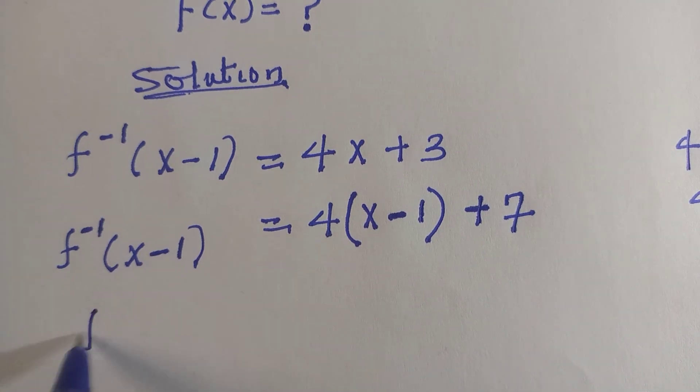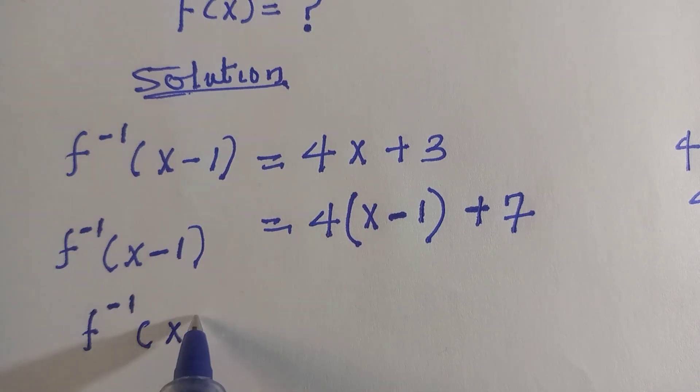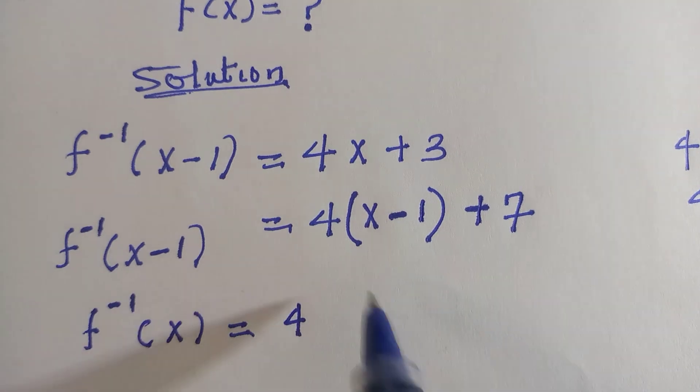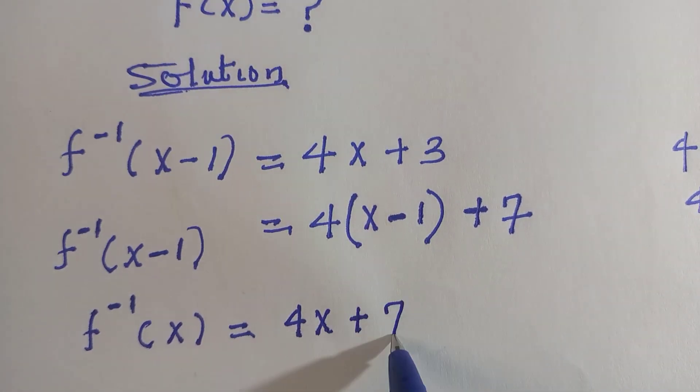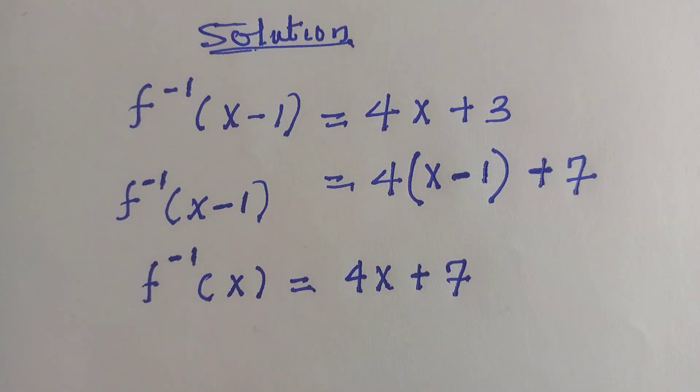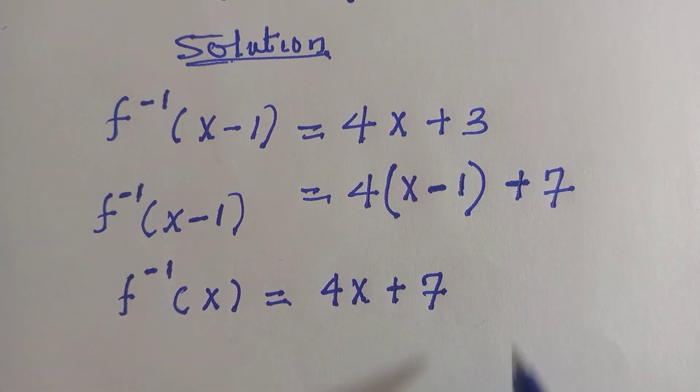Then we now have f inverse of x equals to 4x plus 7, because it must resemble what is plugged in the function. Okay, the first problem has been solved.